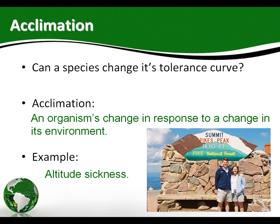So that's what we mean by acclimation — there's actually a physical change. That's an example of how a species can change its tolerance curve, just a little bit. We're not talking about penguins being able to live in the desert through acclimation — some things are just beyond the range of the organism's physical body to do. But for small changes, most species can acclimate.